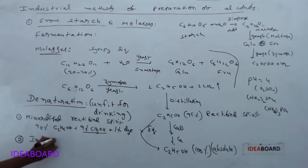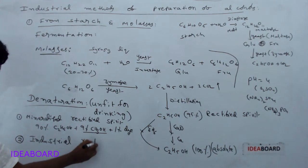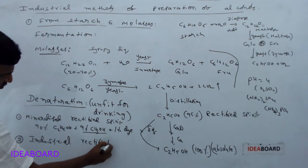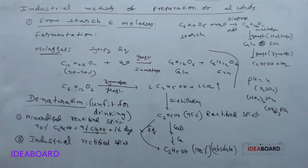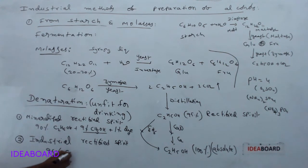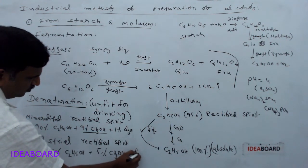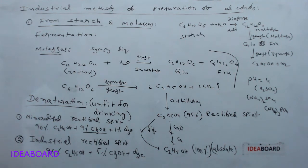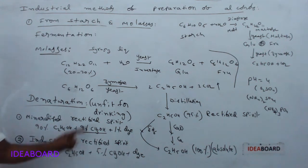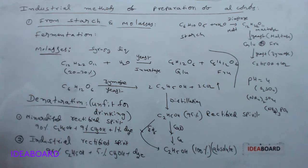The second type is industrial rectified spirit, which contains 95 percent ethyl alcohol and 5 percent methyl alcohol, plus a small trace of dye. The purpose of both mineralized and industrial rectified spirits is denaturation — making them unfit for drinking. This concludes the industrial methods of preparation of ethyl alcohol.